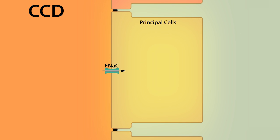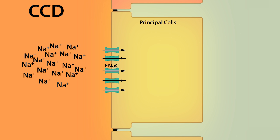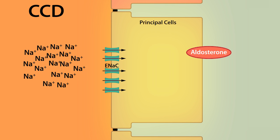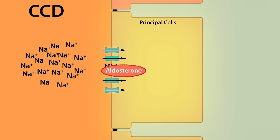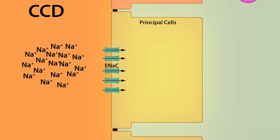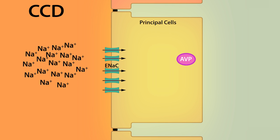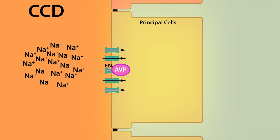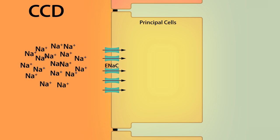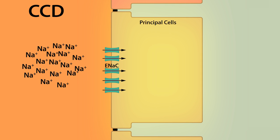Sodium reabsorption along the cortical collecting duct varies based on the number and activity of ENaC, as well as the luminal sodium concentration. Aldosterone is by far the most significant regulator of ENaC number and activity, while arginine vasopressin, or AVP, is known to increase ENaC activity. However, its physiological significance remains less clear.